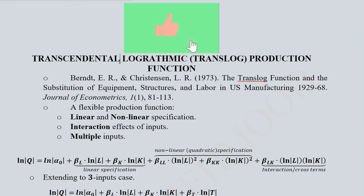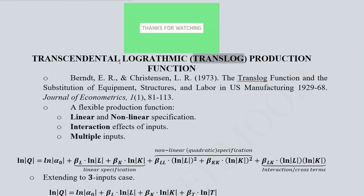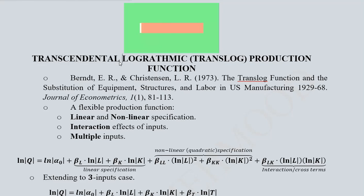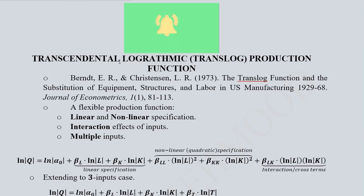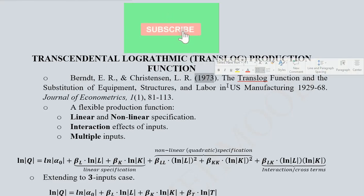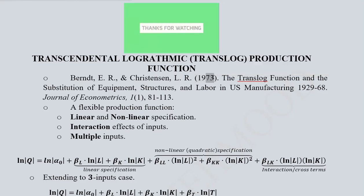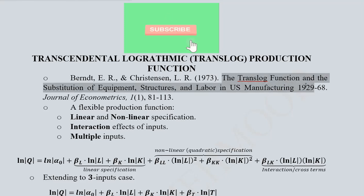The title of this production function is Transcendental Logarithmic, and it is converted into a portmanteau — that is, 'translog' — because both words have been merged. 'Transcendental' relates to non-algebraic elements since in non-algebraic algebra we have logarithms and trigonometric ratios. This is why we call it the Transcendental Logarithmic function. It is attributed to two individuals who presented a more concrete form of it in 1973, though there is evidence of work on it in 1971 as well.